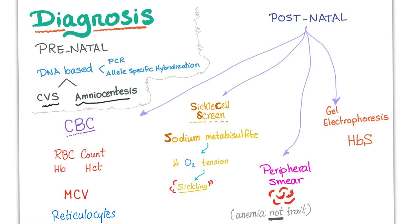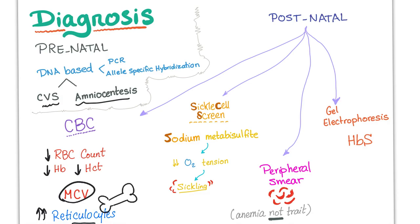Postnatally, you have several methods. On CBC, the red blood cell count is usually low. Hemoglobin and hematocrit are low — this is anemia. MCV is usually normal. It's a hemolytic anemia. Reticulocytes are usually increased because there is hemolysis and the bone marrow responds by increasing production of red blood cells — reticulocytes are the baby red blood cells. However, if you have parvovirus B19 or aplastic crisis, the reticulocyte count will be decreased.